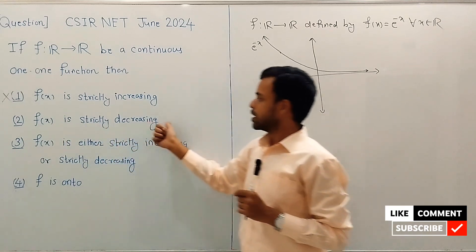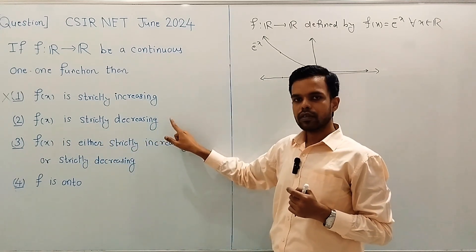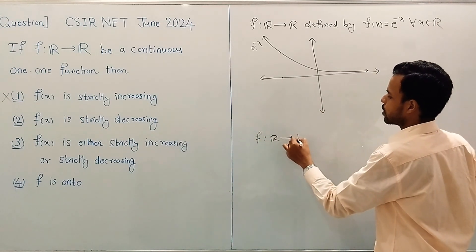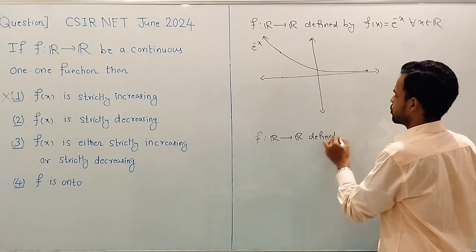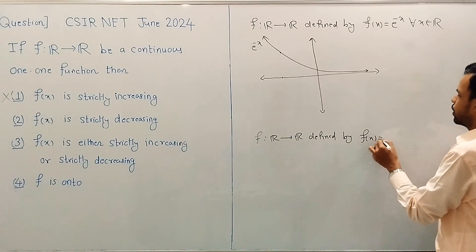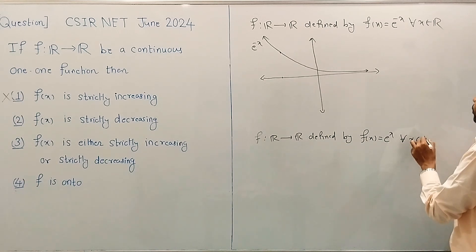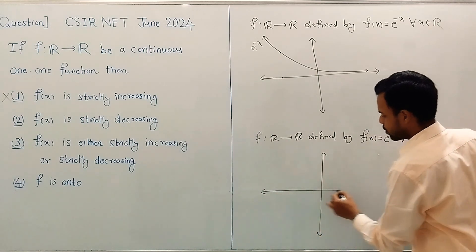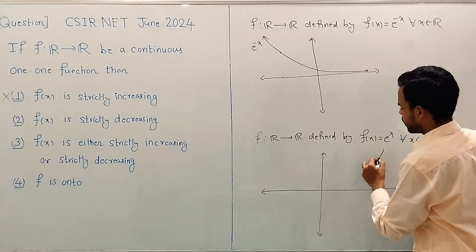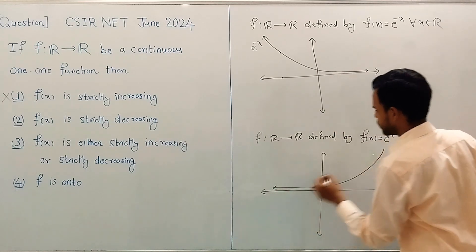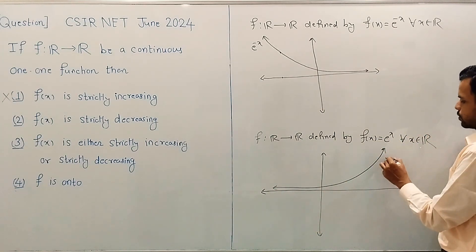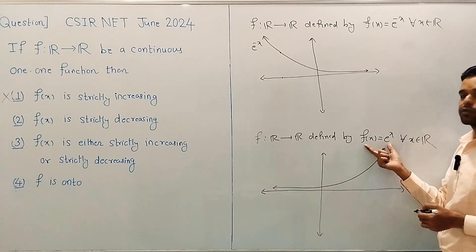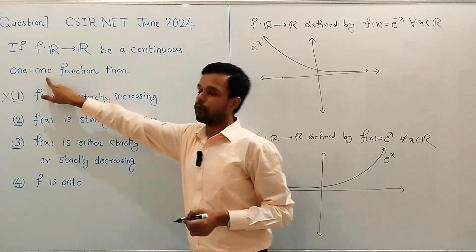Now option 2: f(x) is strictly decreasing. Is this a true statement? No, not necessarily. For example, consider the function f from R to R defined by f(x) = e^x for every x in R. Its graph looks something like this. From the graph, it is clear that f(x) = e^x is a continuous one-one function.